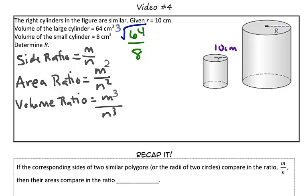So, we are going to take the cubed root of 64 and the cubed root of 8. So, the cubed root of 64 is 4, and the cubed root of 8 is 2.